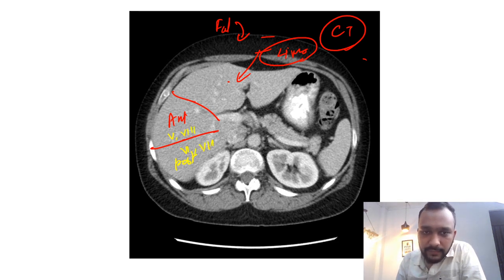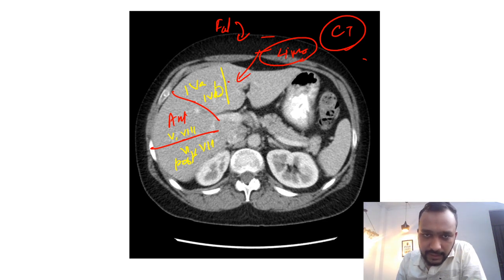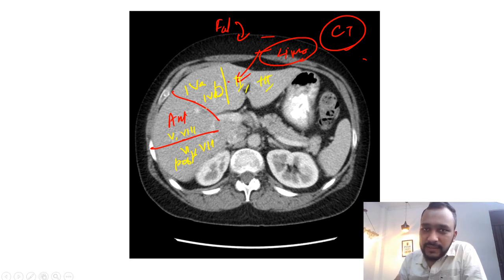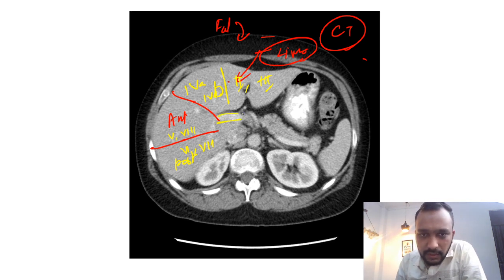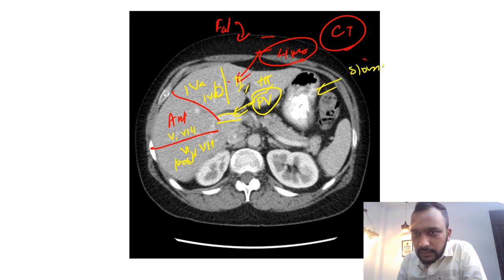The left hepatic vein divides the liver into segment 4a and segment 4b, and laterally you have segments 2 and 3. These segments are further divided into superior and inferior segments by your portal vein.